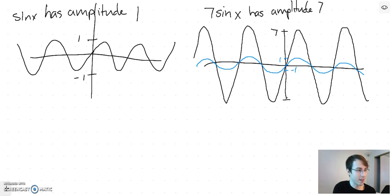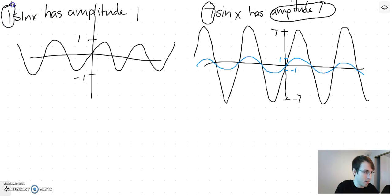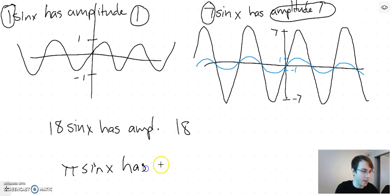So you might see that the number in front here, that's telling you what the amplitude is. This is like 1sin(x) has amplitude 1, so you can say like 18sin(x) has amplitude 18, and like 5sin(x) has amplitude 5.